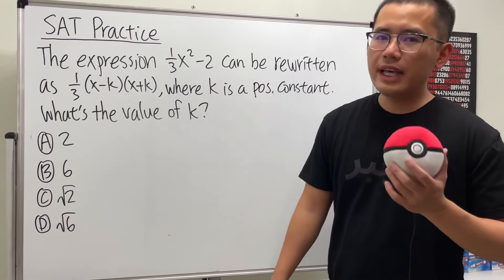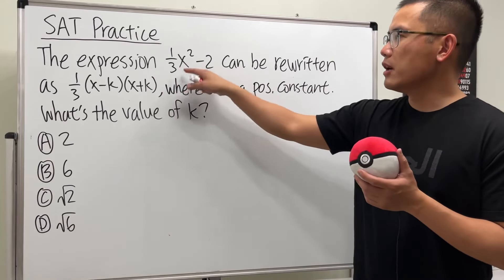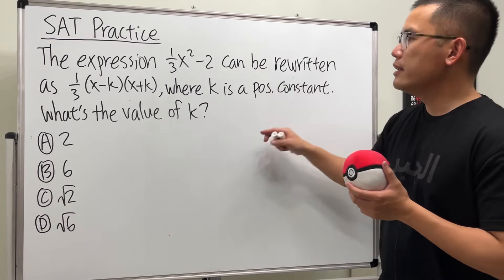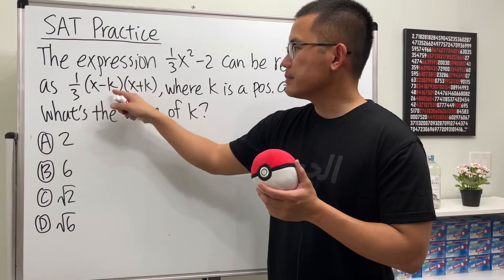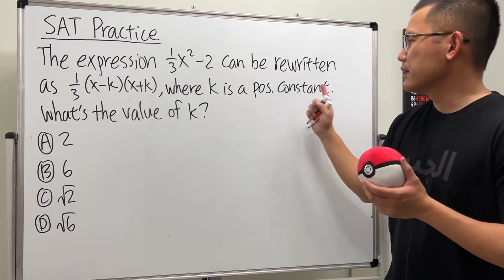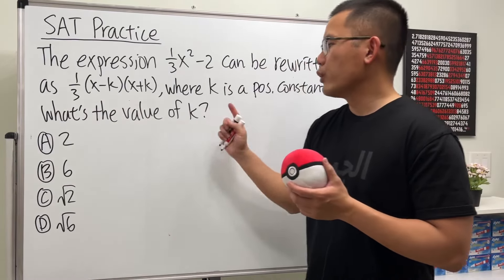Here we have another SAT algebra practice question. Check this out. We are given the expression 1/3 x² - 2, and it says this can be rewritten as 1/3 times (x - k)(x + k), where k is a positive constant. And we would like to know what is the value of k.